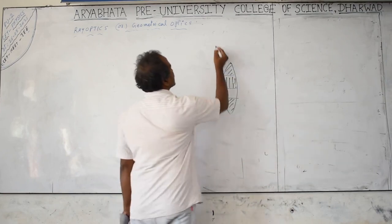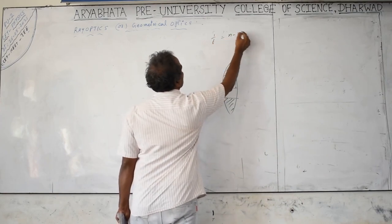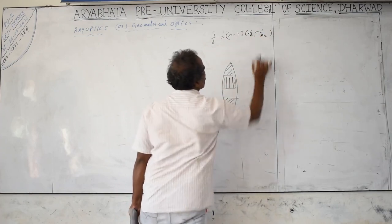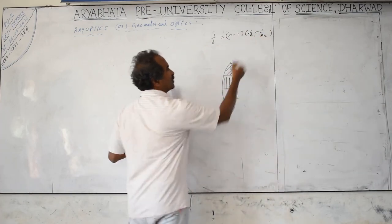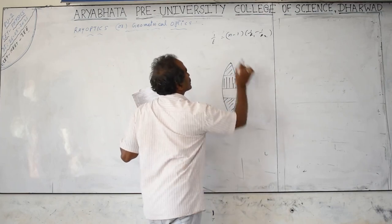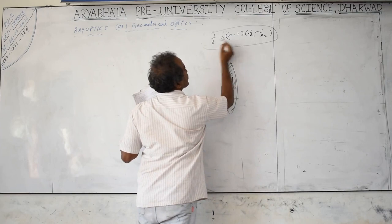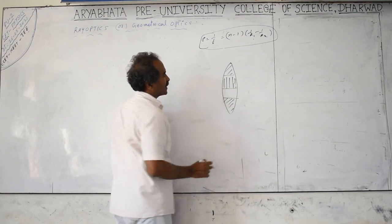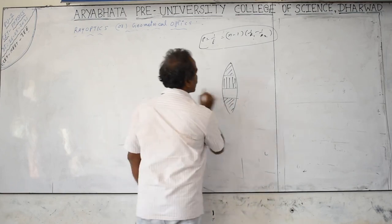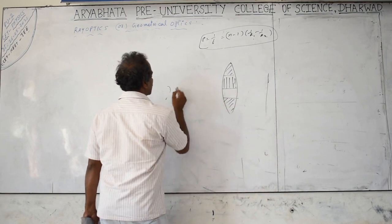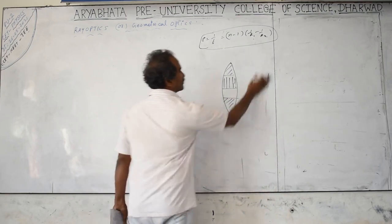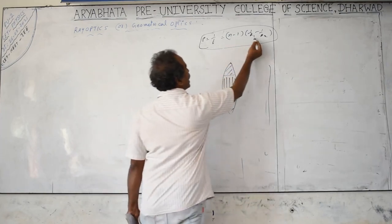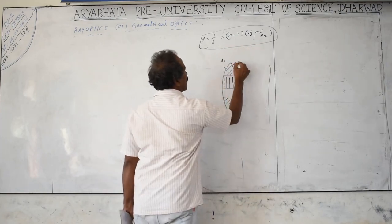The lens maker's formula is: 1/f = (n − 1)(1/R1 − 1/R2). The focal length depends on refractive index and radii of curvature. They will ask how many images are formed. One focal length gives one image; different materials give different focal lengths. If R1 and R2 are fixed for all materials, then the number of distinct refractive indices determines the number of images.